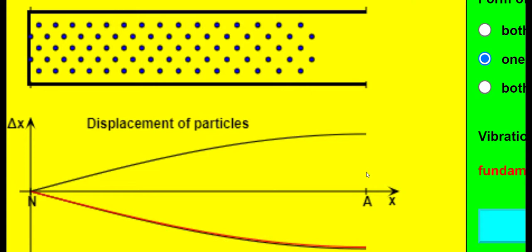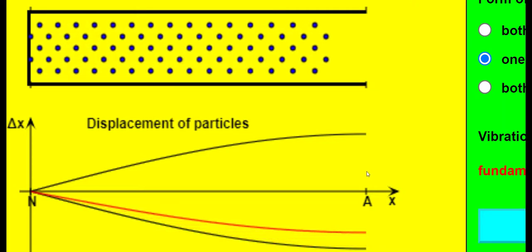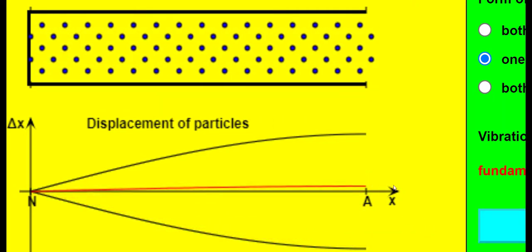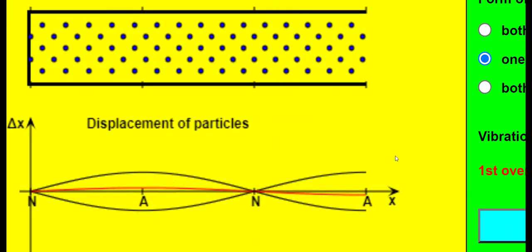If the speaker were to emit sound waves at three times this original frequency, a new stationary wave forms, the third harmonic.